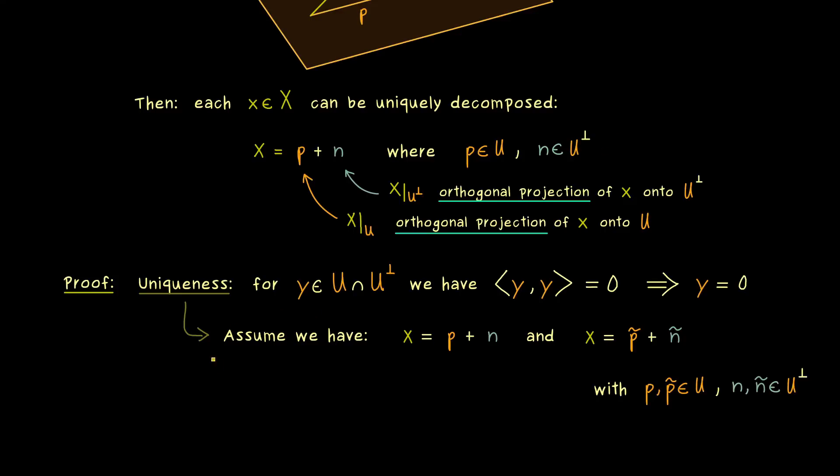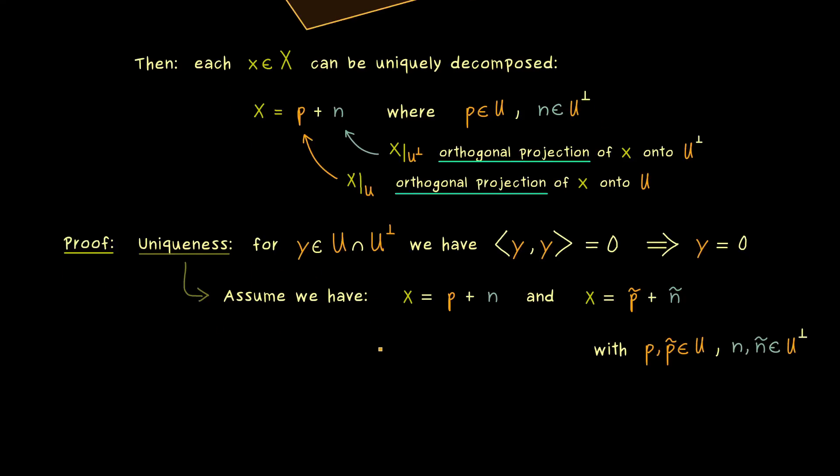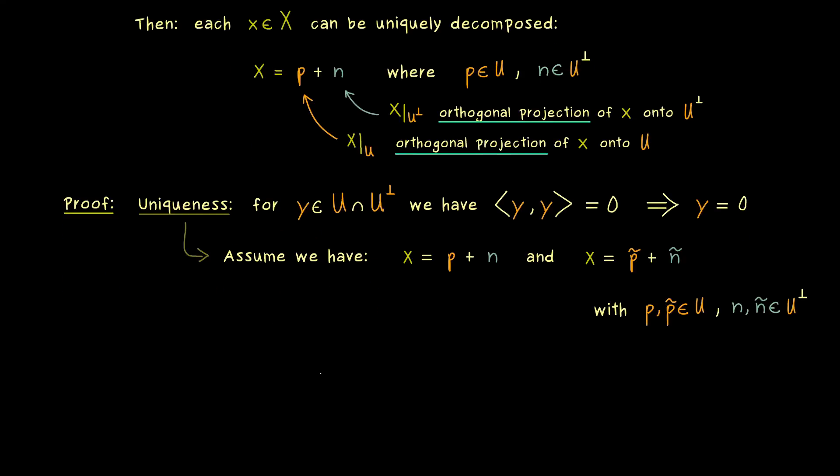So you see, this is the natural thing to assume when we want to show uniqueness. And now what we have is that both vector additions represent the same vector x, so we have an equality. So p plus n is equal to p tilde plus n tilde. And now if we use the subtraction of vectors, we have p minus p tilde on the left hand side and n tilde minus n on the right hand side.